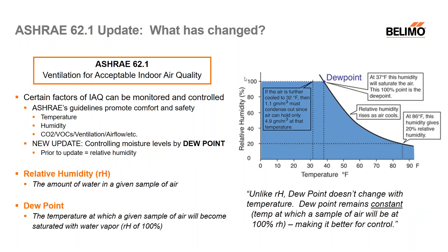For those of you who aren't too familiar with ASHRAE, ASHRAE is a global society aimed towards the betterment of overall building health and occupant safety. A quote pulled directly from the ASHRAE website: "Through research, standards writings, publishing, and continuing education, ASHRAE shapes tomorrow's better built environment today." One of ASHRAE's standards that they promote is standard 62.1, which has an immediate focus on ventilation and indoor air quality. Within the standard in section 5.5.10 specifically, ASHRAE puts out recommendations on how to control moisture levels within your facilities.